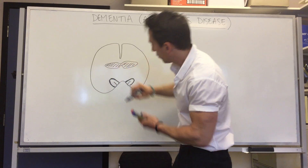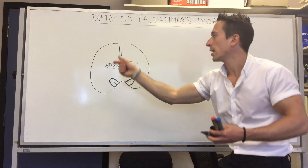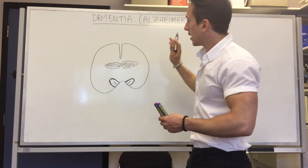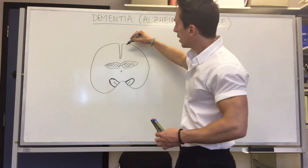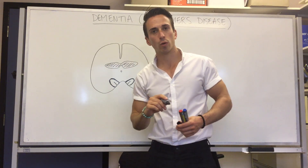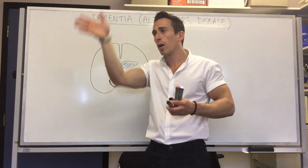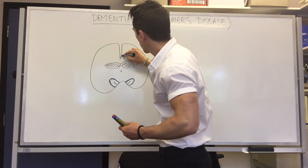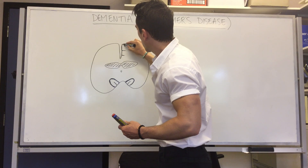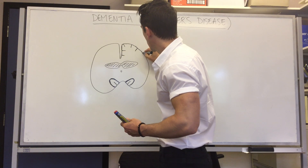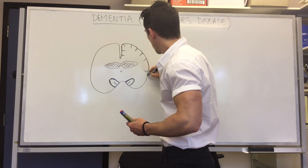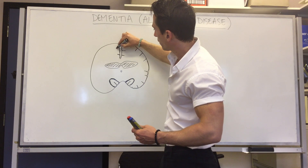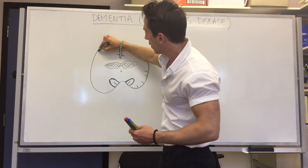The lateral ventricle comes out and curves back around — so the superior aspect curves to the inferior aspect. In addition, you have the gyri and sulci of your cortex: the lumps and bumps of the brain. A gyrus is a bump up and a sulcus is a dip down. In a healthy brain, the sulci are quite tightly packed between each other.